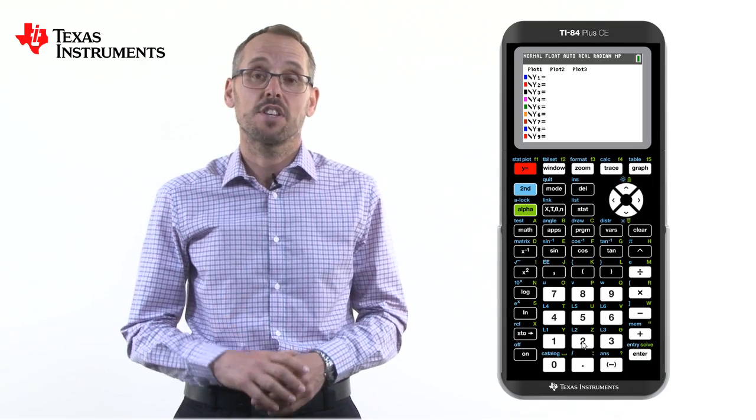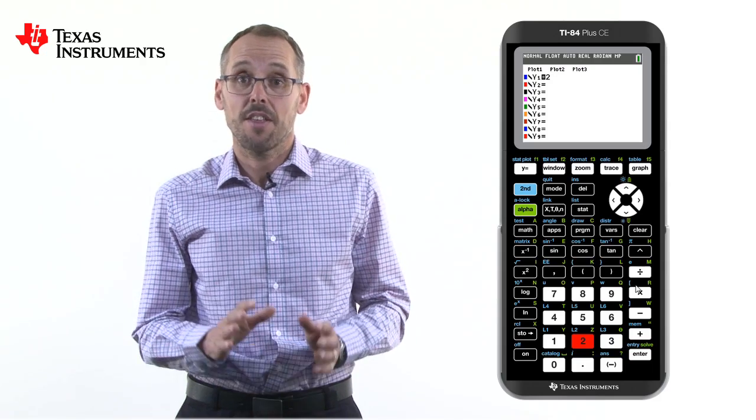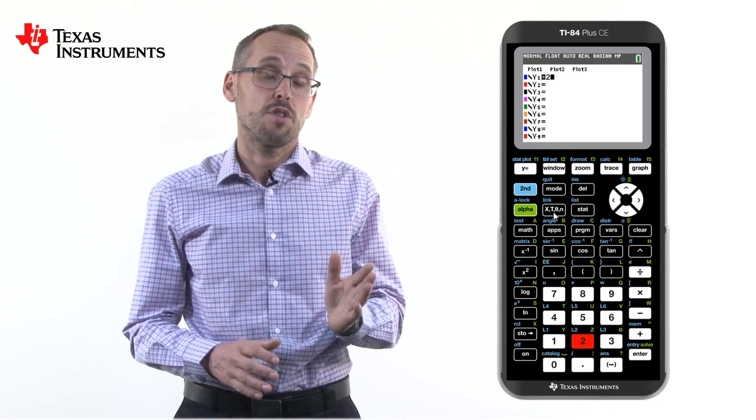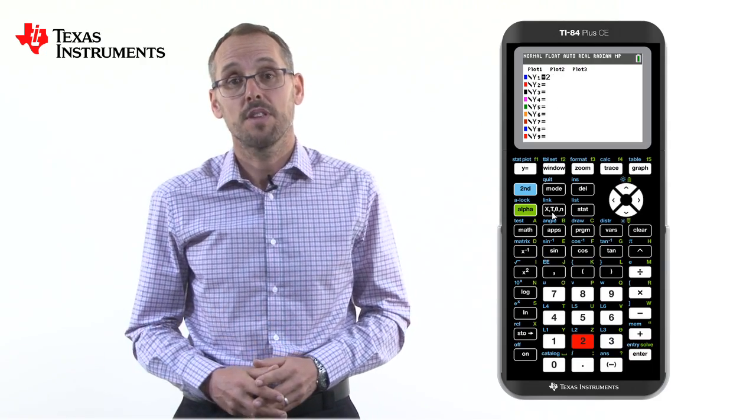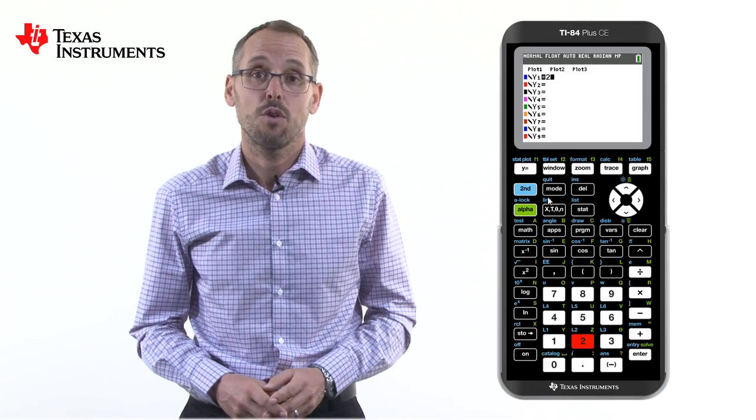Let's type in 2x plus 1. We don't need to type in times because the calculator knows that there is a multiple between the number and the variable. X is located automatically up near the second function button.